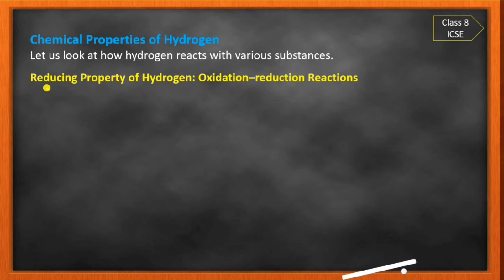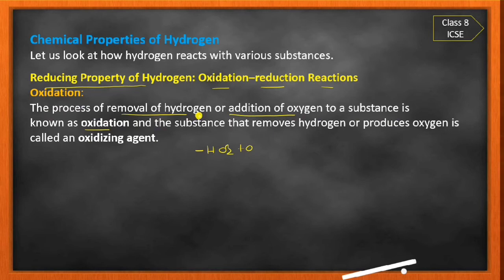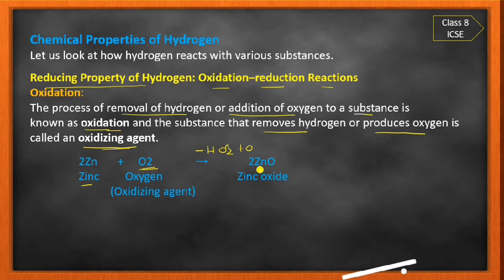Now the reducing property of hydrogen. There are two types of reactions: oxidation and reduction. Oxidation is the process of removal of hydrogen or addition of oxygen to a substance. The substance that removes hydrogen or adds oxygen is called an oxidizing agent. For example: zinc reacts with O₂ to form zinc oxide — here oxygen is the oxidizing agent.